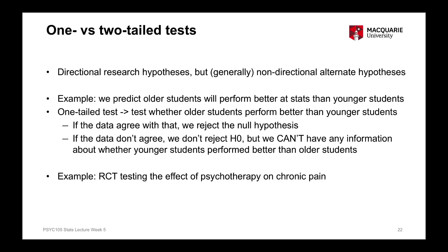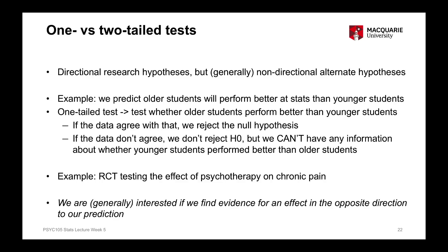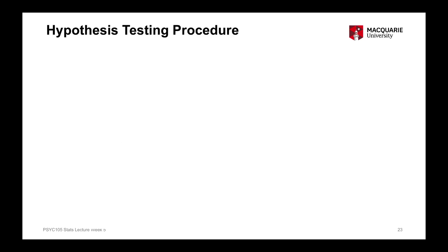In psychology, we generally want to know if there's evidence for an effect in the opposite direction to our prediction. That's why we have directional research hypotheses but non-directional alternate hypotheses. The next part covers the process we go through to undertake hypothesis testing, which will be a little theoretical now but will make more sense from next week when we have practical tests.